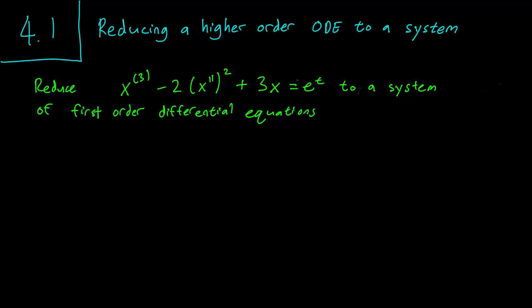For this problem, we are going to have to write down several variables. So let x1 be our variable x. Let x2 be x', which is going to be equal to x1'. And let x3 be equal to x'', and that's obviously going to be equal to x2'. So a nice guideline here is that if you have a third order equation,